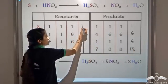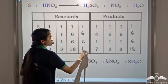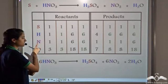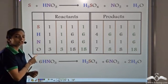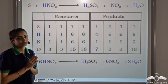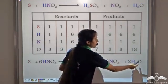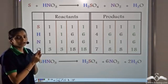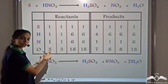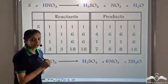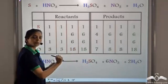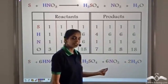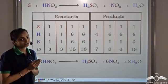No change on the reactant side. Looking at the equation now: sulfur is balanced, hydrogen is balanced, nitrogen is balanced, and oxygen is balanced — 18 on each side. So initially, even by using eight steps we were not able to balance the equation. But when we made our oxygen atoms even first, the equation became really simple to balance.